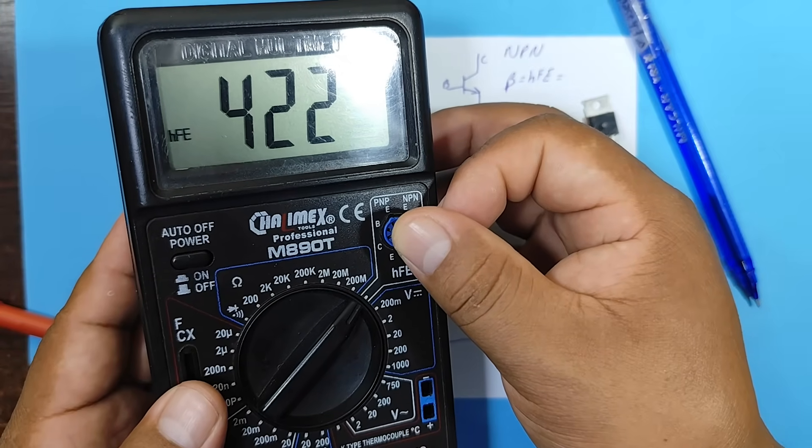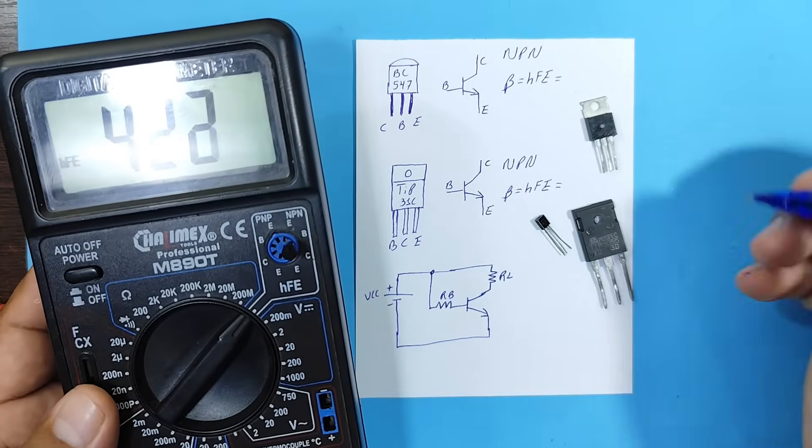Or rather, 422. So this one would have a gain of 422.